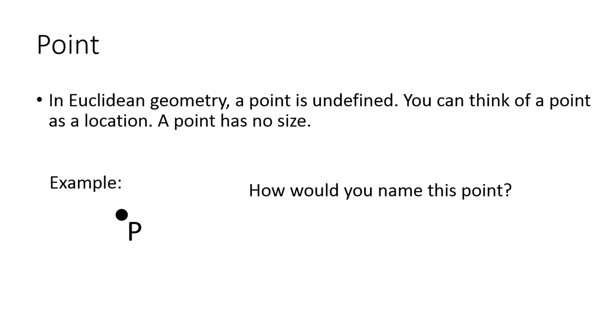So our first example is a point. A point in Euclidean geometry is undefined. You can think of a point as a location, and a point has no size. So how would you name this point? You would name it by saying point P.